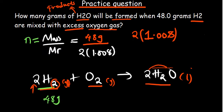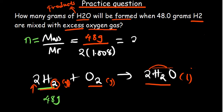The result of 48 ÷ (2 × 1.008) is approximately 23.81 moles of H₂.